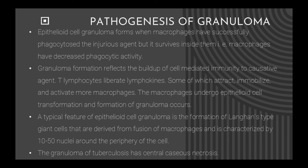Pathogenesis of granuloma. Epithelioid cell granuloma forms when macrophages have successfully phagocytosed the injurious agent but it survives inside them — for example, when macrophages have decreased phagocytic activity. Granuloma formation reflects the buildup of cell-mediated immunity to the causative agent. T-lymphocytes liberate lymphokines, some of which attract, immobilize and activate more macrophages. The macrophages undergo epithelioid cell transformation and the formation of granuloma occurs.